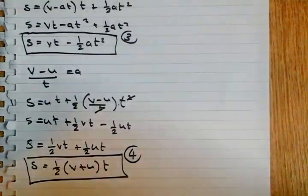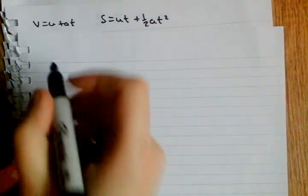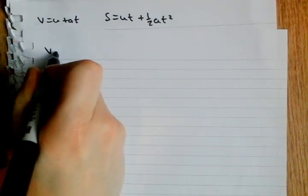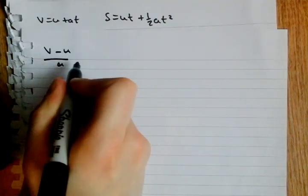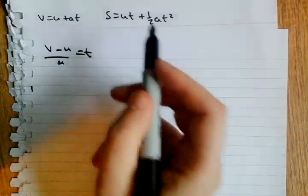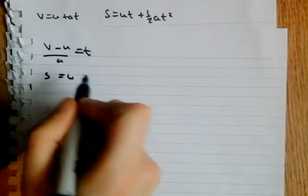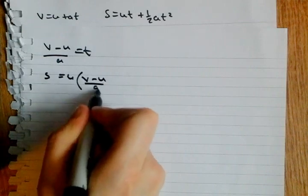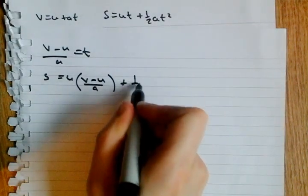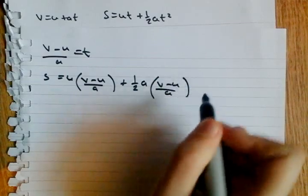Now, for the final one, it's like the big brother, kind of pain in the backside, but it's not hard. It's still the same. You just rearrange. So, we substitute in here. We get S equals U times V minus U over A plus a half A times V minus U over A squared.